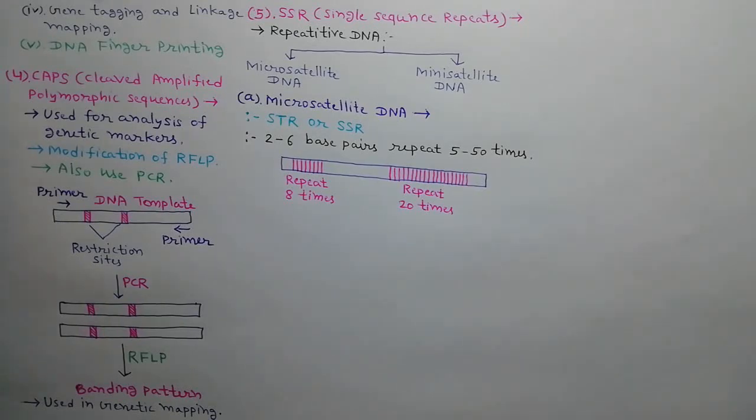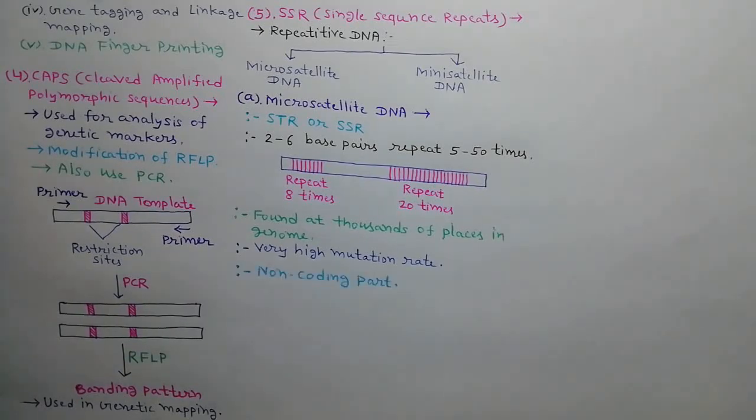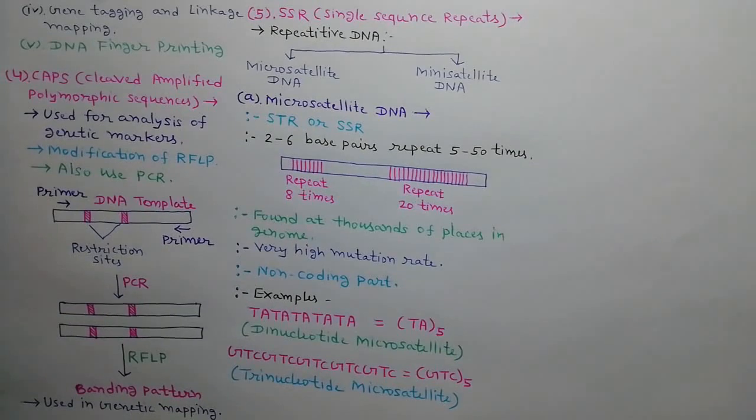As shown in the diagram, microsatellite DNA is found at thousands of places in genome of an organism. Their mutation rate is very high so that they produce high genetic diversity. This is the non-coding part of DNA, hence high mutation rate is not harmful for organisms. For example, TA sequence repeat for 5 times and GTC sequence repeat for 5 times etc. SSR is used for genetic mapping in eukaryotes.